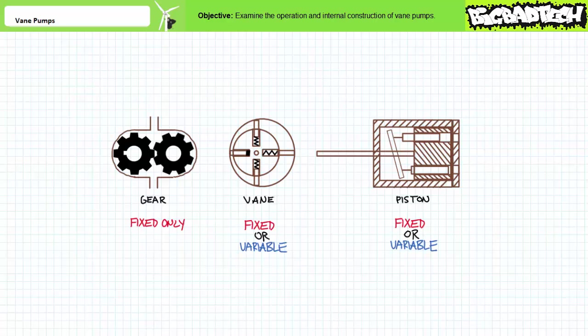Gear pumps use a pair of equally sized meshing gears to provide pressurized flow to a hydraulic system. All gear pumps are fixed displacement pumps. Vane pumps can either be fixed or variable displacement pumps, depending upon construction. A vane pump uses a slotted rotor and extendable vanes that scrape the inside of a cam ring. A fixed vane pump keeps the relationship between the rotor and cam ring constant, whereas a variable displacement vane pump varies the position of the cam ring to vary displacement per revolution. Piston pumps can either be fixed or variable displacement, using an angled plate to position pistons inside a rotating piston block.